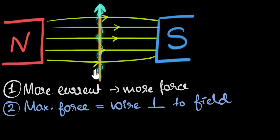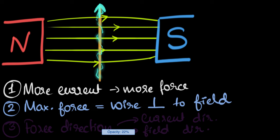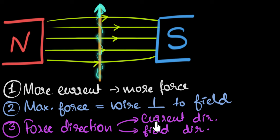The last thing we'll talk about is the direction of the force acting on this wire — we will figure that out in complete detail in a separate video. But the question here is: what does the direction of the force depend on? Experiments show us that the direction of the force depends on two things: the direction of the current, and the direction of the field. If the current is going upwards, the force acts in one direction; if the current is reversed, the direction of the force reverses. Similarly, if you reverse the field direction, the direction of the force also reverses. We will discuss this in great detail in another video.